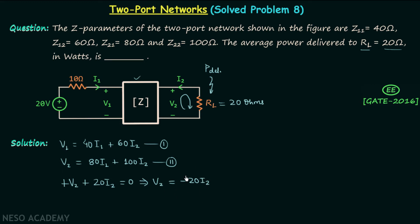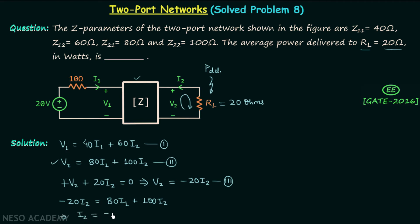Now we will substitute V2 equal to negative 20 I2 from equation number 3 into equation number 2. Therefore we will have minus 20 I2 equal to 80 I1 plus 100 I2. When you simplify this, you will have current I2 equal to minus 2 over 3 times current I1. This is our fourth equation.